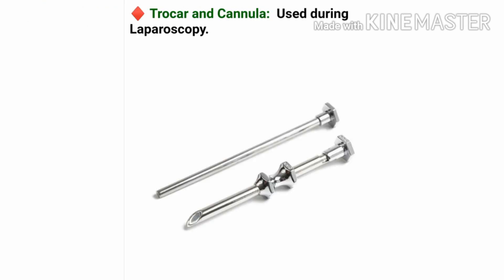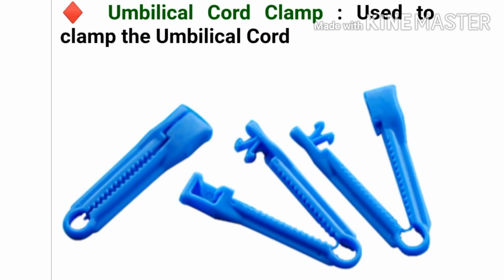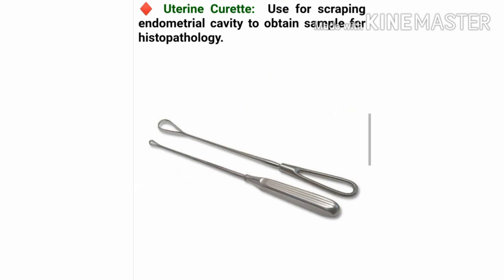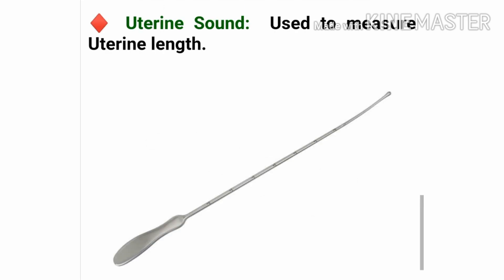This is the trocar and cannula, used during laparoscopy. This is the umbilical cord clamp, used to clamp the umbilical cord, and this is the umbilical cord scissor, with which cutting of the umbilical cord is done. This is the uterine curette, used for scraping the endometrial cavity to obtain a sample for histopathology. This is the uterine sound, mainly used to measure the uterine length.